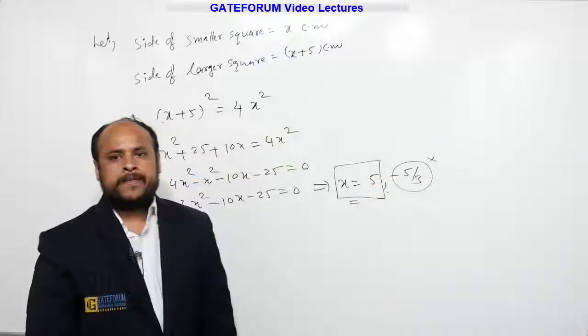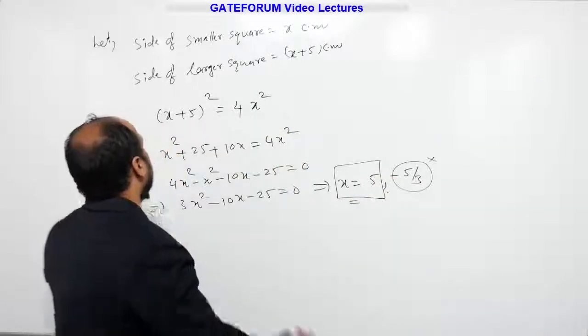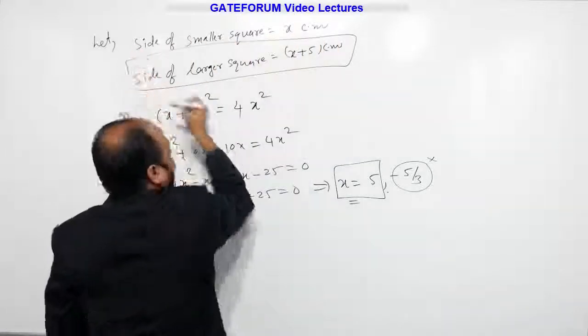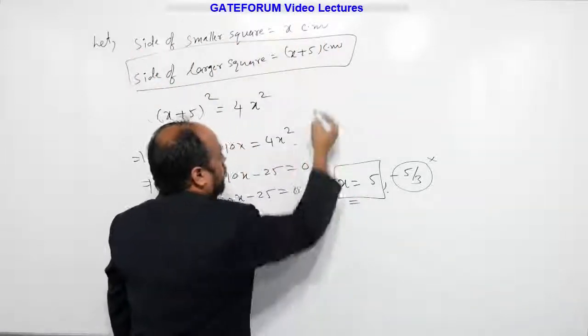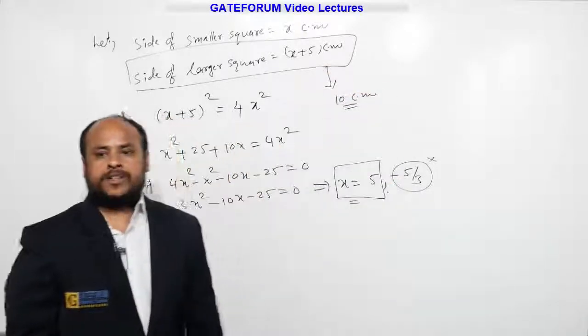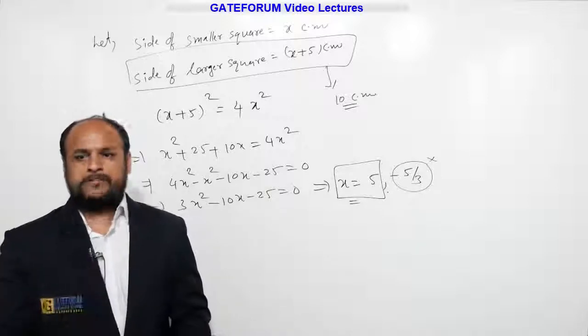But what is asking here? The side of the larger square. What is the side of the larger square? x plus 5 centimeters. So if x is 5, then x plus 5 will become 10 centimeters. This is the required answer from the options. The right answer, the right option is B.